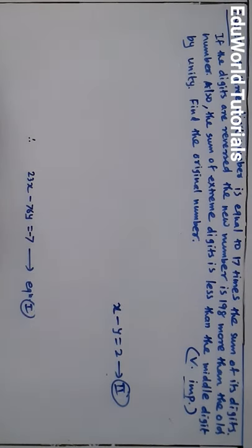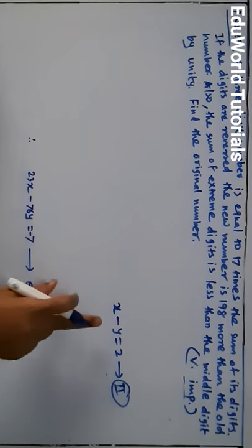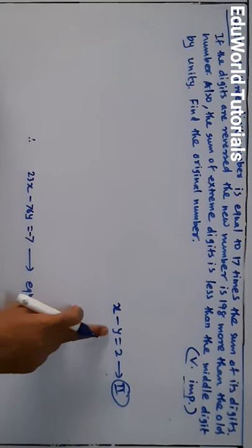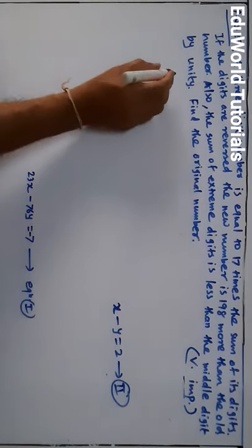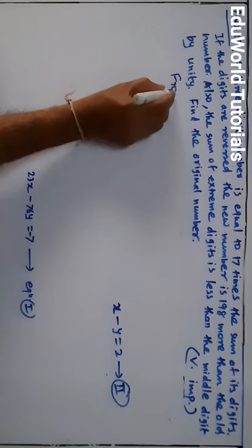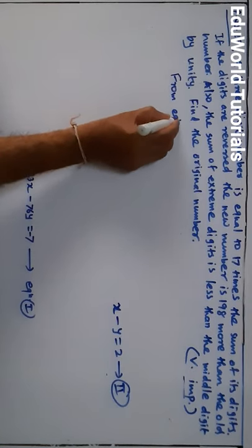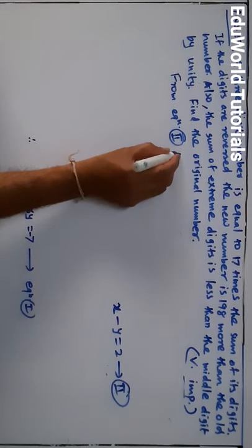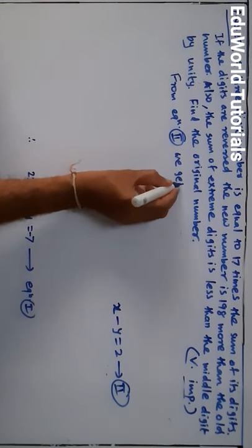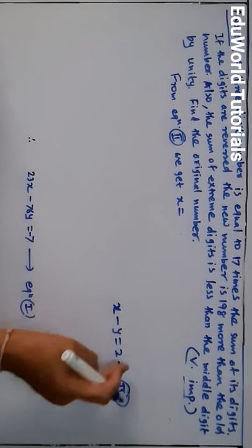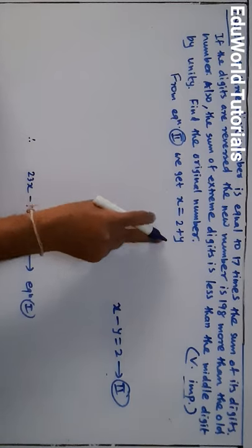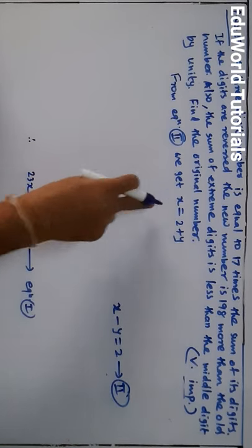We have equation 1: 23x minus 76y = minus 7, and equation 2: x minus y = 2. From equation 2, using the substitution method, if I bring minus y to the other side I get x = 2 + y.